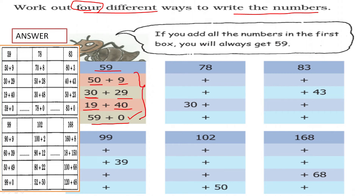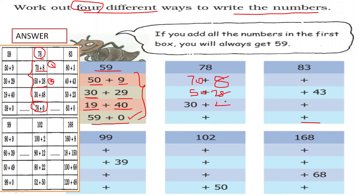Now for 78: first way is 70 plus 8. Second way is 50 plus 28. Third way is 30 plus 48. Fourth way is 78 plus 0. All of these equal 78. For 83: 80 plus 3 is one way; 40 plus 43 is second; 50 plus 33 is third; 83 plus 0 is fourth. There are four different ways to write each given number.